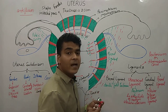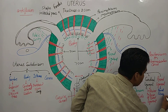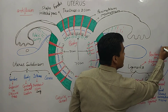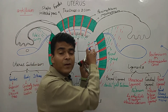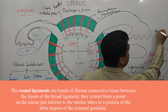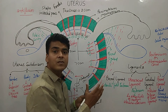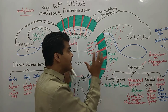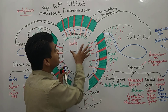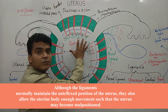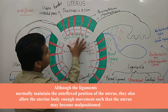The round ligament consists of bands of fibrous connective tissue extending from below the uterine tube to the labia majora. The uterus is held in position by these ligaments, though the body of the uterus can still take some movement — particularly during fertilization and pregnancy, the ligaments allow the uterine body some movement.